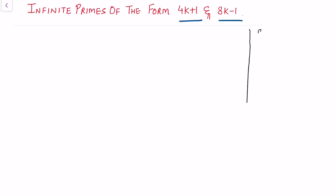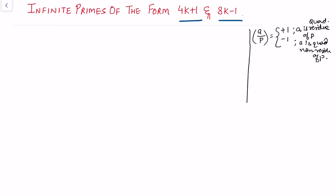We know that the Legendre symbol (a/p) takes two values: either +1 or -1. It equals +1 if a is a quadratic residue of p — that is, if x² ≡ a (mod p) is solvable — and -1 if a is a quadratic non-residue of p. So when the congruence is solvable, the Legendre symbol (a/p) equals 1.